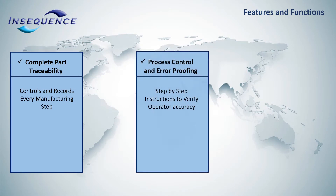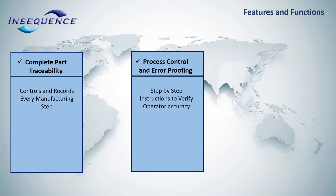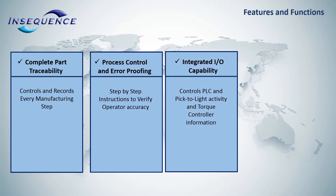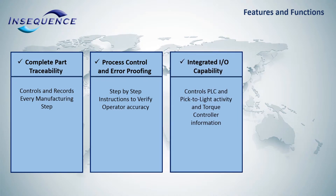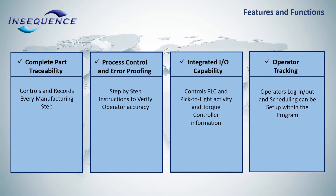Process control and error-proofing allows the entire manufacturing process to be organized into individual step-by-step directions in order to verify operator accuracy. Integrated in/out capability directly drives inputs and outputs to control PLC activity, pick-to-light activity, and torque controller information. Operator tracking requires operators to log in and out for traceability purposes and to ensure that only trained operators work in critical operations. Scheduling and operator shifts can also be entered into the program.